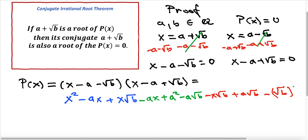The square root of b squared simplifies to b, since the index and the power cancel. Now let's add the like terms.